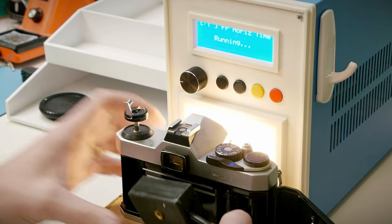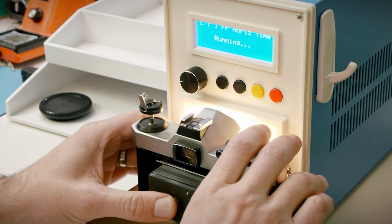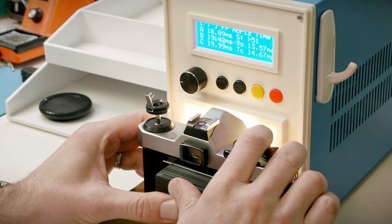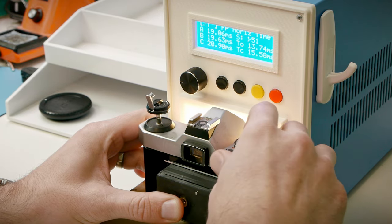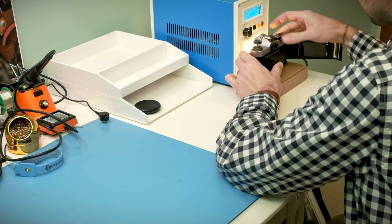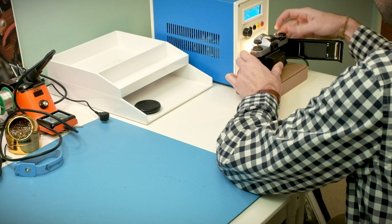I'm going to start at 1/60th of a second, which is the flash sync speed for this camera, and probably the easiest speed for a camera to get right. Yeah, the top right number there is showing me the measured shutter speed at 1/50th of a second, which is pretty good. Let's try some other speeds. 1/250th looks good. How about 1/500th?